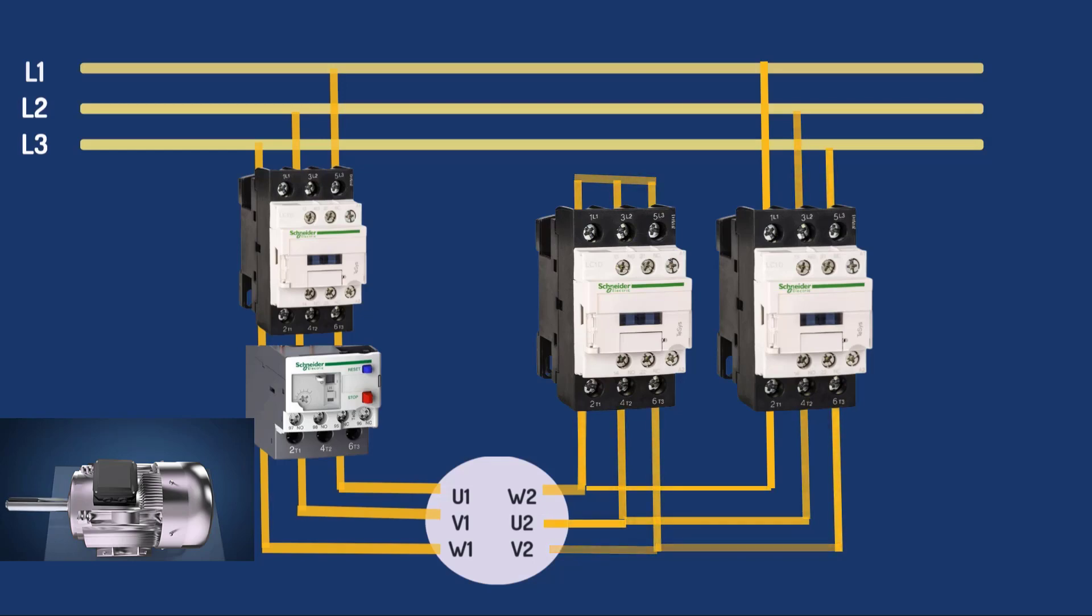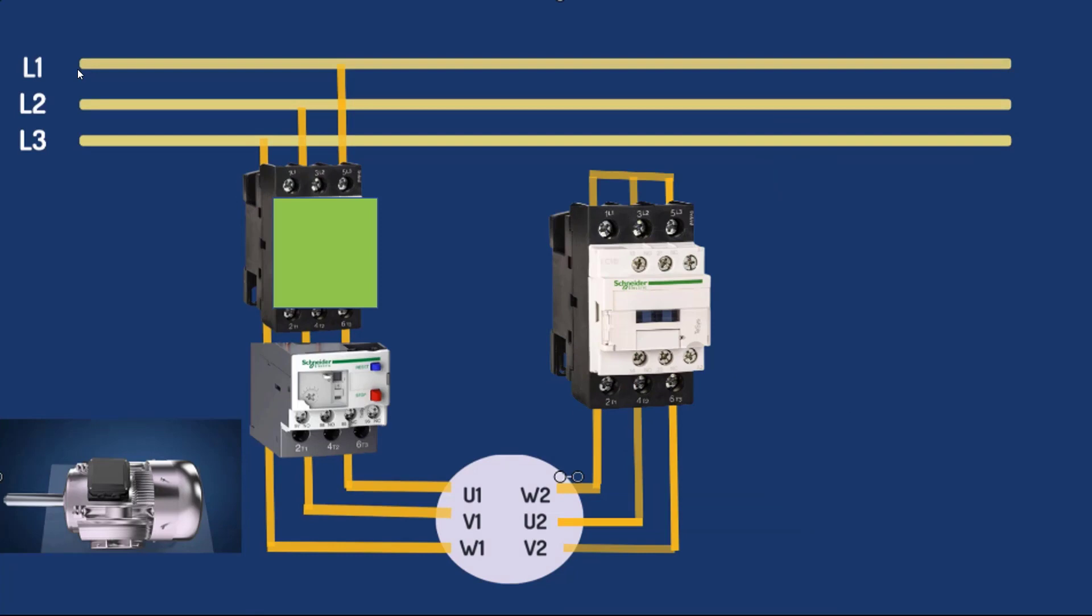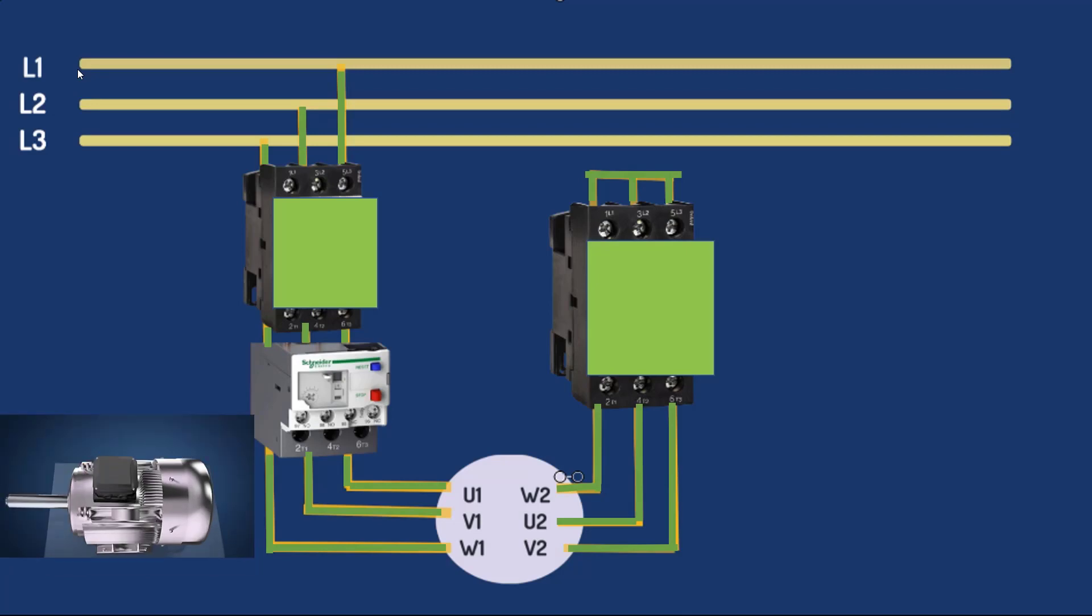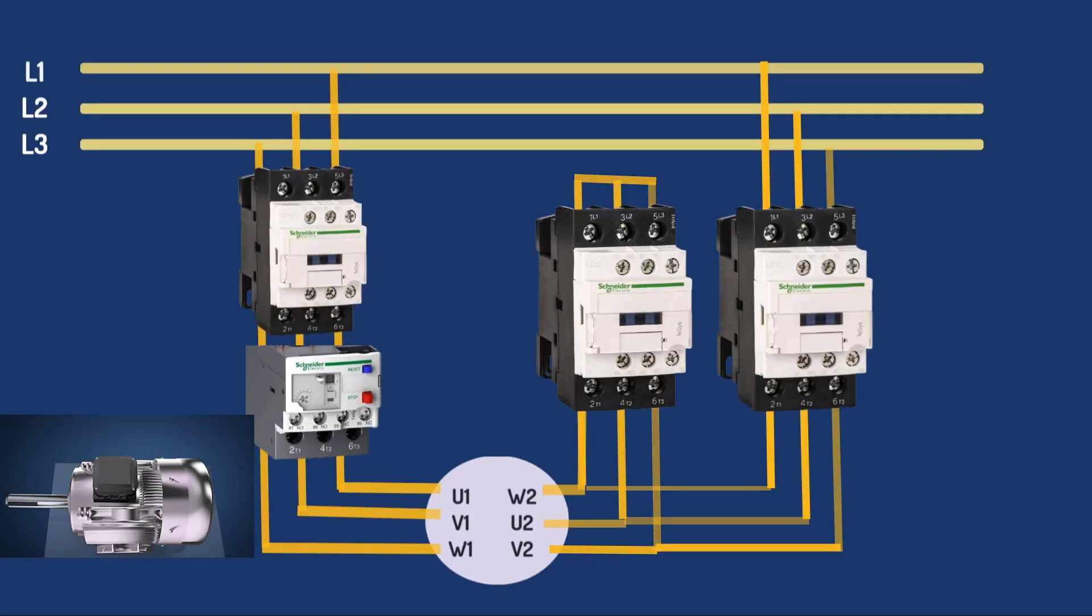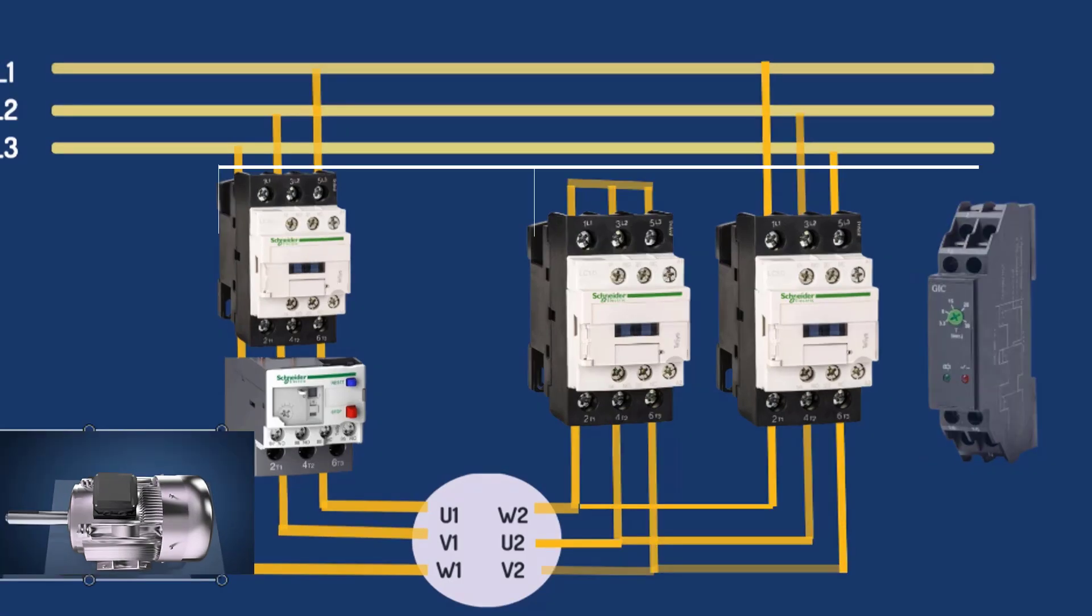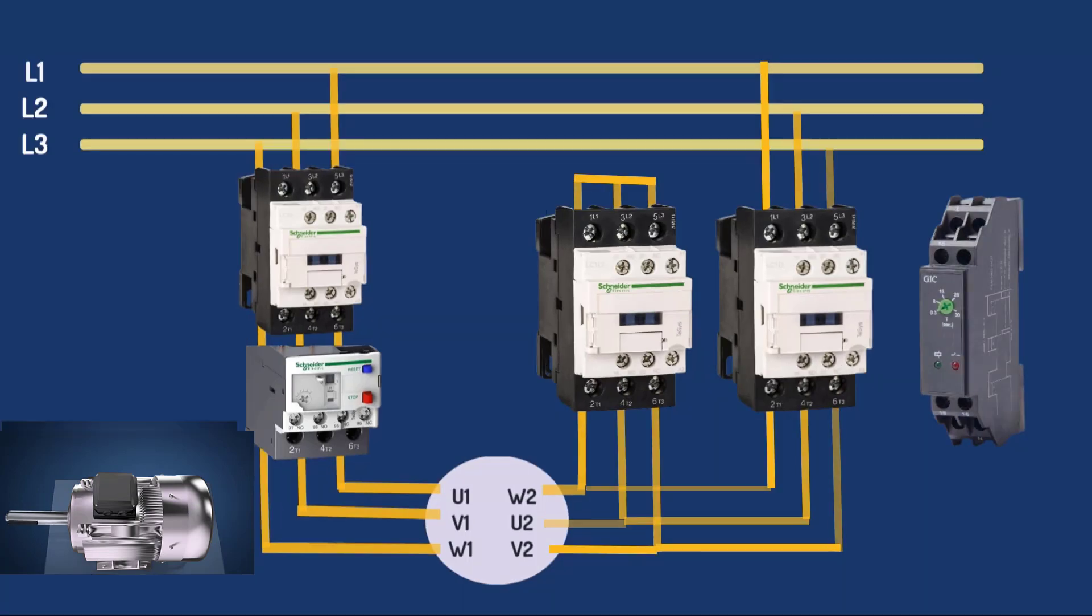Let's now understand the sequence of a star delta starter. Initially, your main and star contactors would be activated. At this point, your motor would be running in star connection. To control the transition from star to delta contactors, we would use a timer. Initially, when the motor starts running in star connection, the timer would start timing.